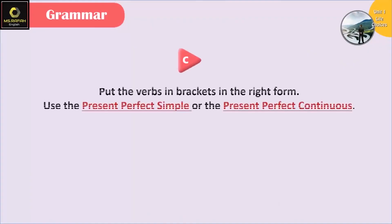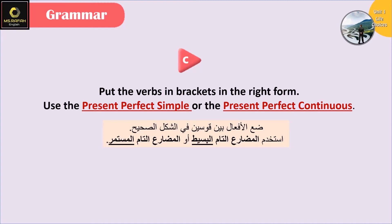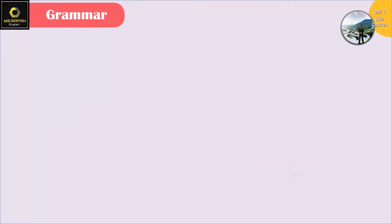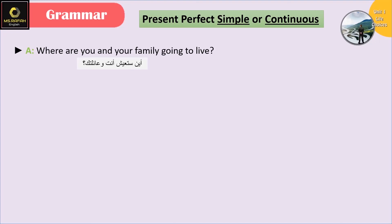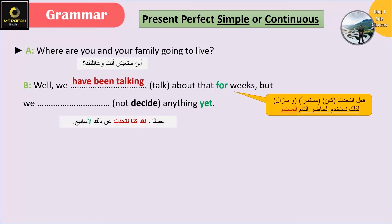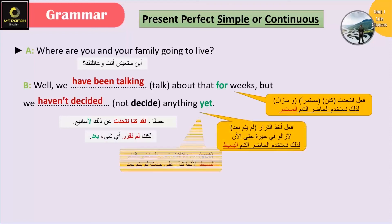Now question C - Put the verbs in brackets in the right form. Use the present perfect simple or the present perfect continuous. Where are you and your family going to live? Well, we've been talking about that for weeks - في عنا الدلالة 'for'، نحنا كنا عم نحكي بالموضوع أسابيع، في عنا استمرارية. But we haven't decided anything yet - 'yet' يا بتجي مع النفي يا بتجي مع السؤال، نحنا كنا عم نحكي بالموضوع عندي استمرارية بس القرار لسه ما أخدنا.